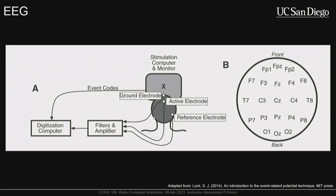This is a basic overview of EEG collection. We have the active electrode we're recording from, a ground electrode to make sure the participant is grounded, and a reference electrode. Whenever we measure voltage, we're measuring a difference — you can't measure voltage at a single point; it has to be referenced to something. The choice of reference electrode is not arbitrary and depends on the type of research you're doing.